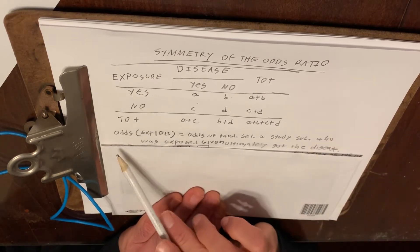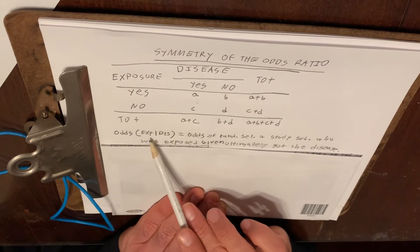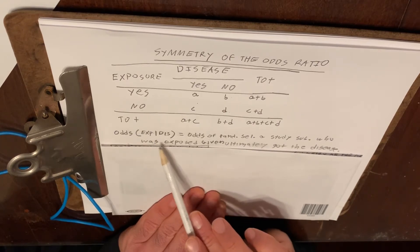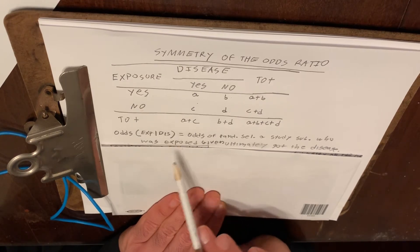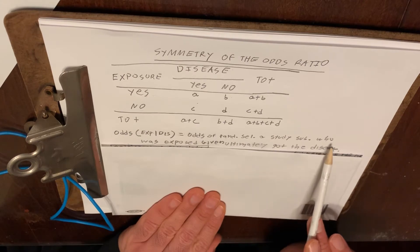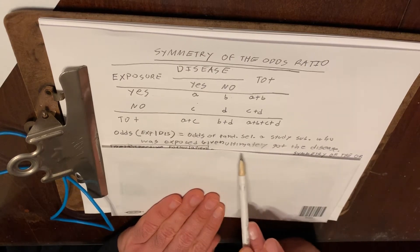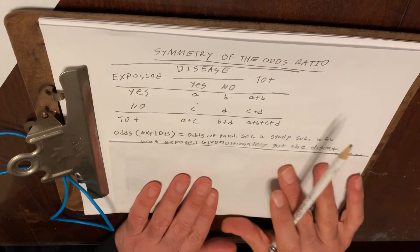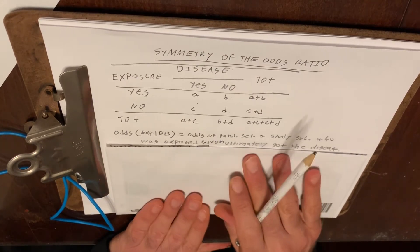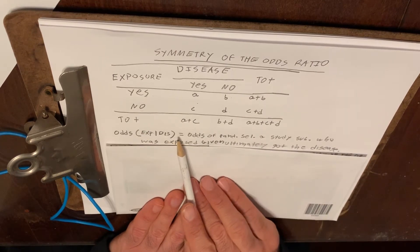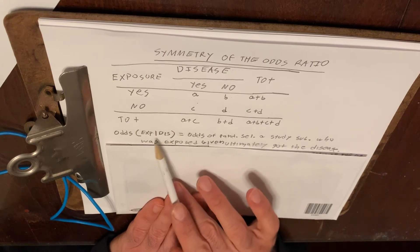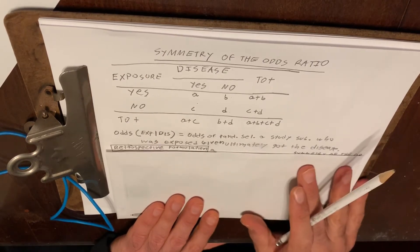Let's define the odds of randomly selecting a study subject who was exposed to the risk factor, given that we know he or she ultimately got the disease. This vertical bar represents the word 'given.' This is what you would call a retrospective formulation, because we're first saying suppose they got the disease, and then we're going backward in time and asking what's the probability they were exposed.